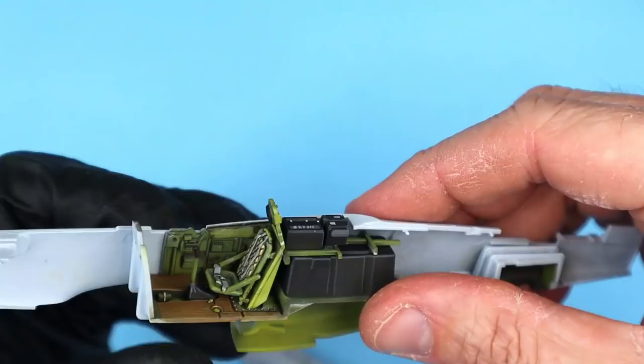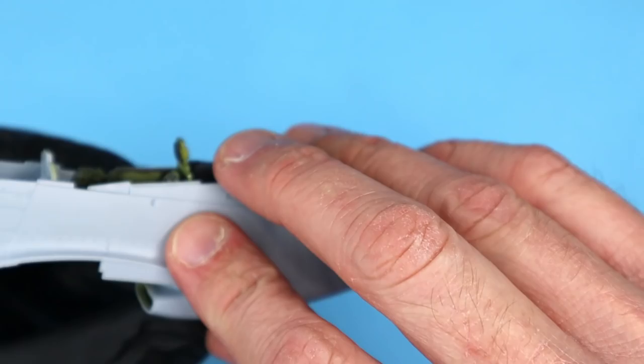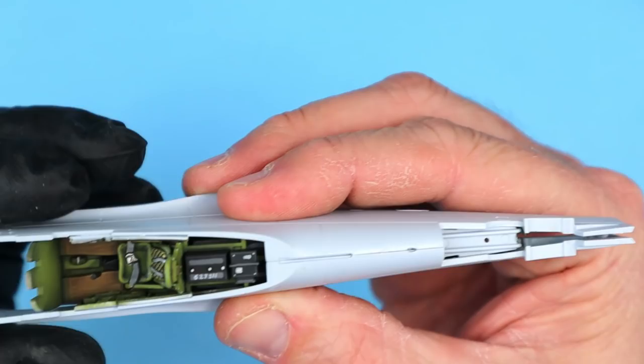Before detail painting the cockpit sidewalls I first glued the pieces to the right and left fuselage halves. I checked the fit of the main cockpit piece with the fuselage halves and confirmed a very good fit with the newly installed cockpit sidewalls.